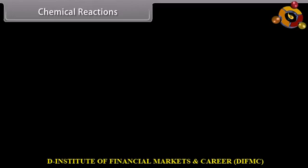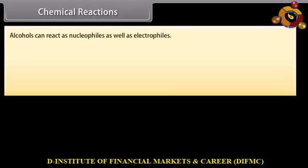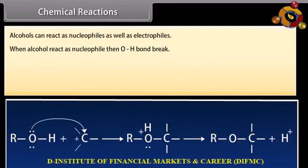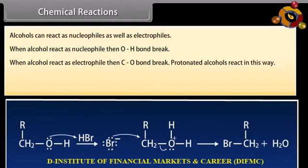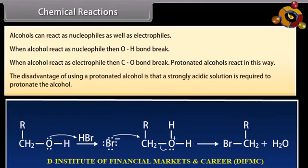Alcohols can react as nucleophiles as well as electrophiles. When alcohol reacts as a nucleophile, the O-H bond breaks. When alcohol reacts as an electrophile, the C-O bond breaks. Protonated alcohols react in this way. The disadvantage of using a protonated alcohol is that a strongly acidic solution is required to protonate the alcohol.